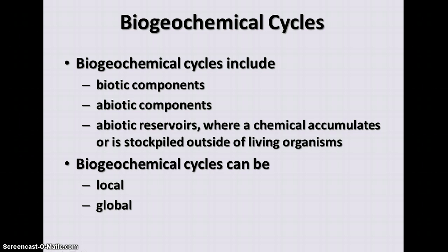This includes living things and non-living things. Biotic refers to the living, abiotic is the non-living, and there are also abiotic reservoirs where chemicals accumulate outside of living organisms. These can be local cycles within a small area or much larger global cycles. We're going to talk about three particular nutrients: nitrogen, carbon, and phosphorus.